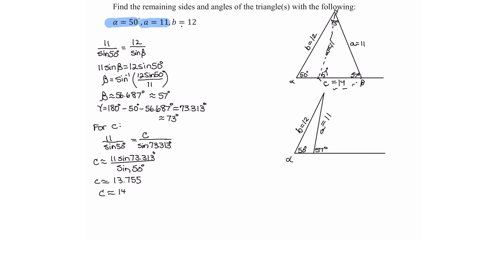The swung angle would also be 57 degrees, but that angle is not in our new triangle — it's on a straight line with our new triangle's angle beta. Since a straight angle measures 180 degrees, our new beta is 180° minus 56.687°, and doing that subtraction gives us approximately 123.313 degrees.